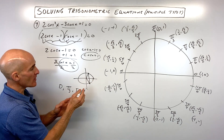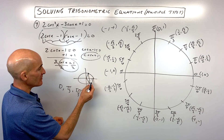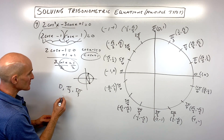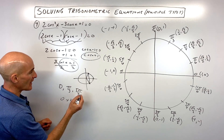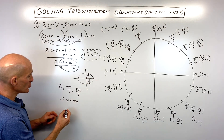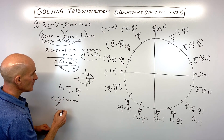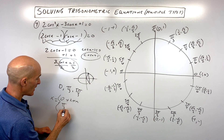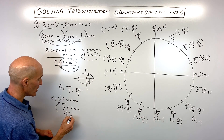These points aren't spaced in a simple pattern like 180° or 90° apart, so we have to write them individually for the general solution: x = 0 + 2πn, x = π/3 + 2πn, and x = 5π/3 + 2πn. Each accounts for going around the circle by full revolutions.